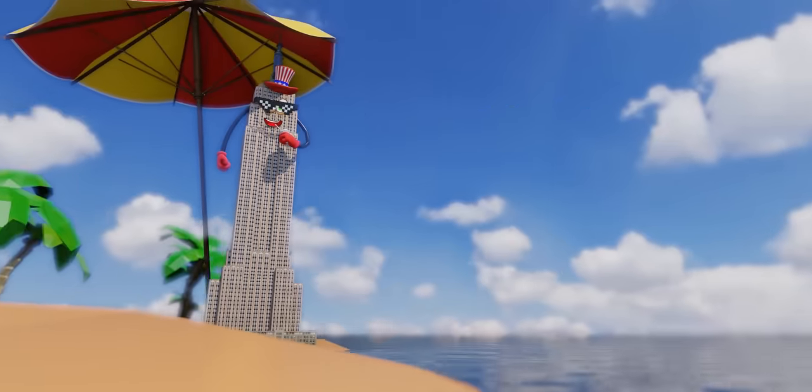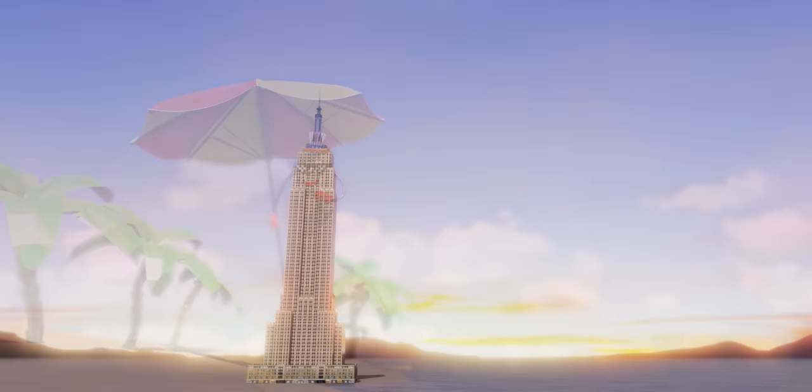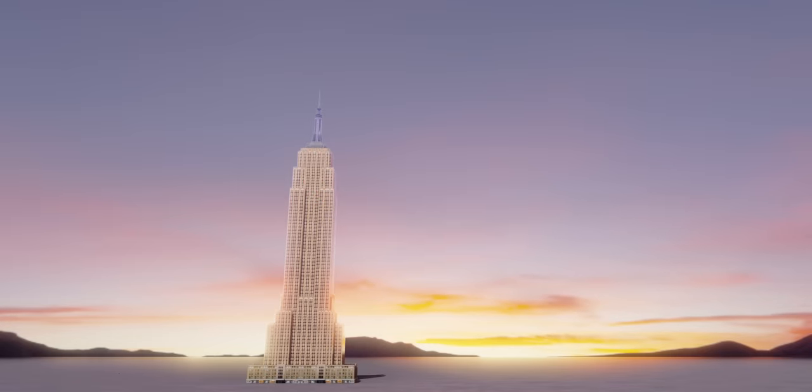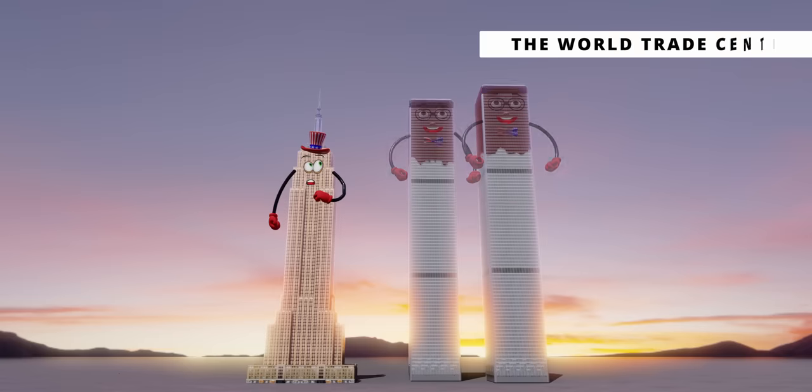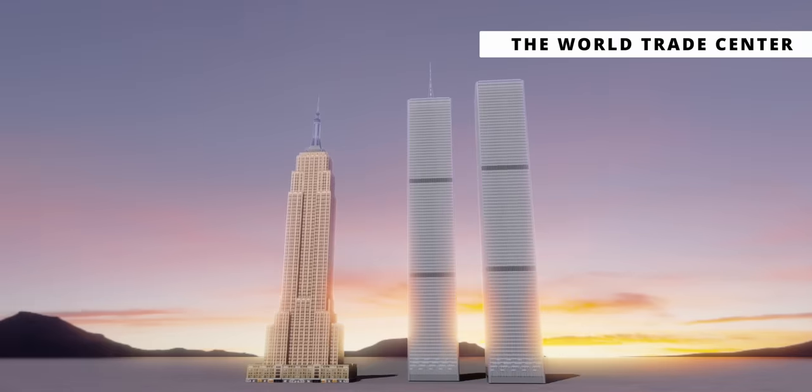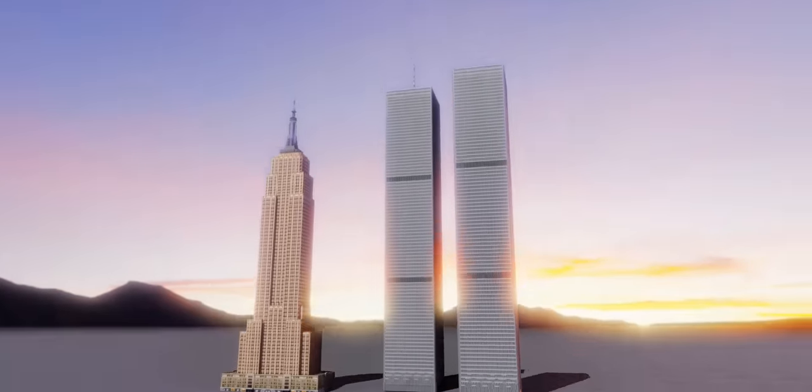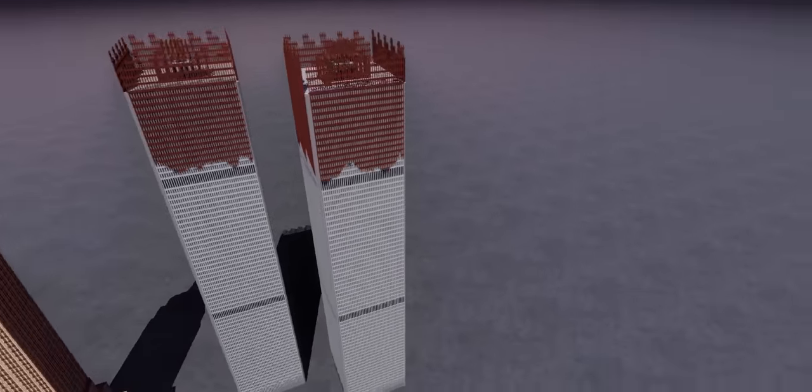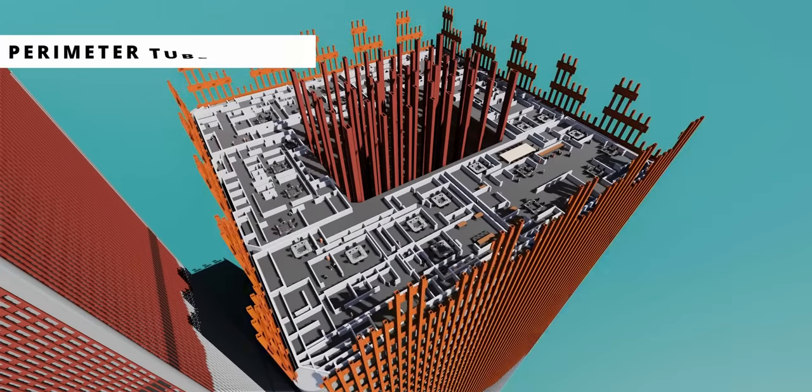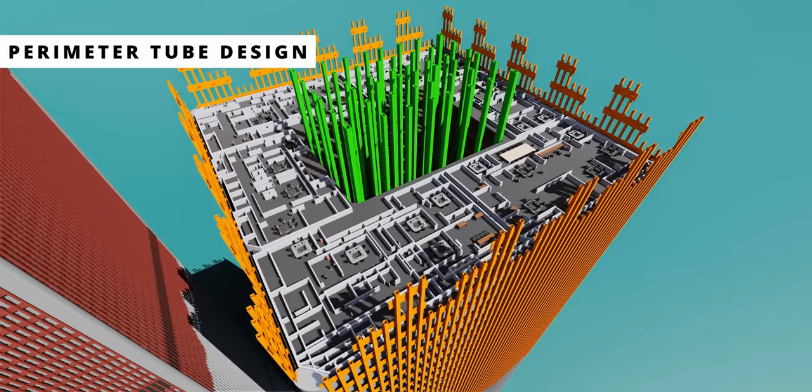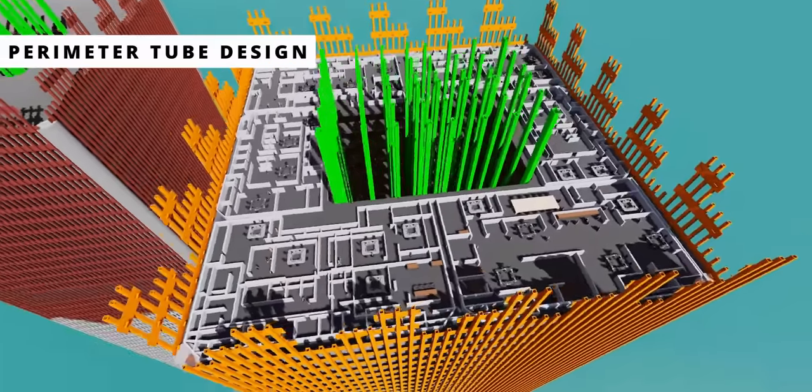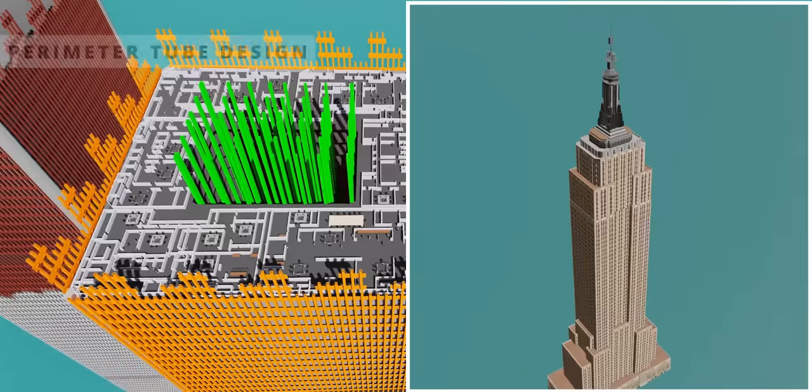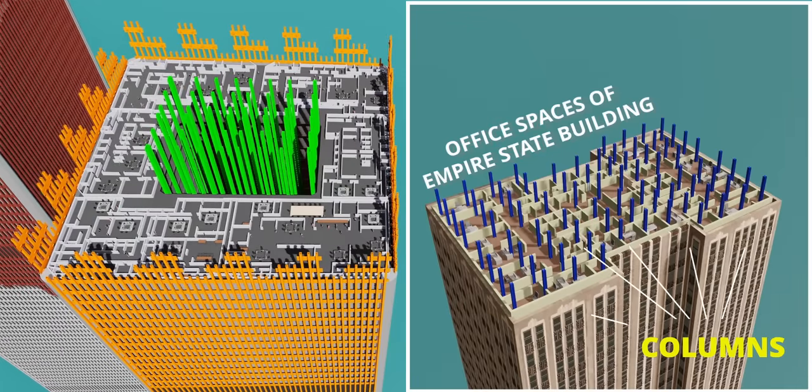However, all good things come to an end. The World Trade Center overtook this building by an impressive 36 meters. The secret behind the World Trade Center was its perimeter tube design. Here, all the supporting structures are located on the perimeter and core of the building. Can you tell the main advantage of this design? You'll get a lot of office space without any irritating columns.